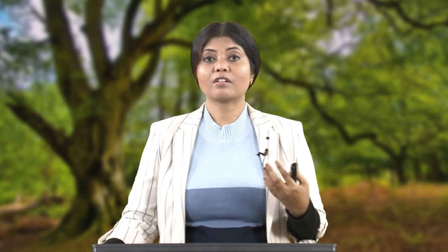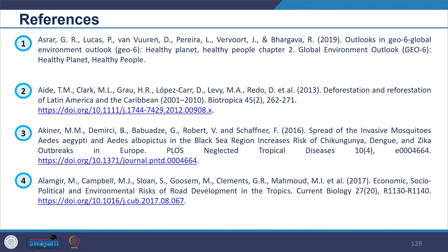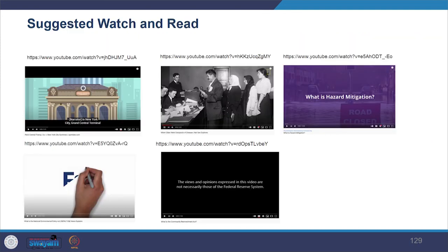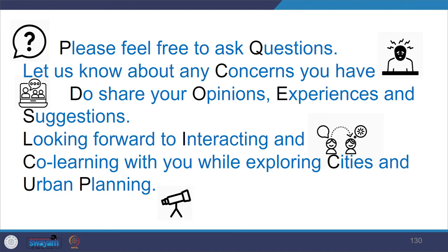That is all for today. Summarizing what we covered: we looked at land resources and sustainable development goals and why land is important for attaining them. We looked at drivers and pressures on land resources, key state and trends in land, and the impacts of changes in land use and their dynamics. Here you can see the references. Additional resources to read and watch are provided in the list given here. Please feel free to ask questions and share your opinions, experiences and suggestions. Thank you.